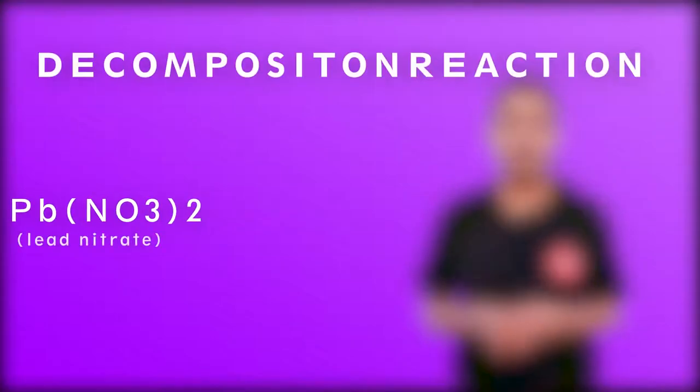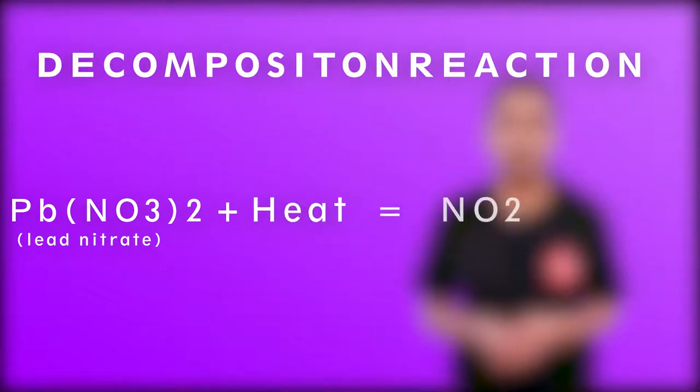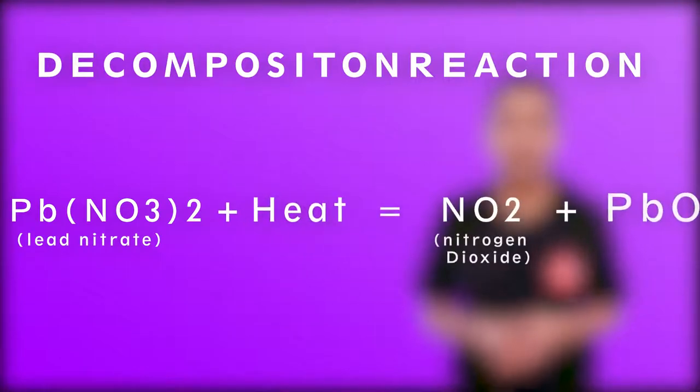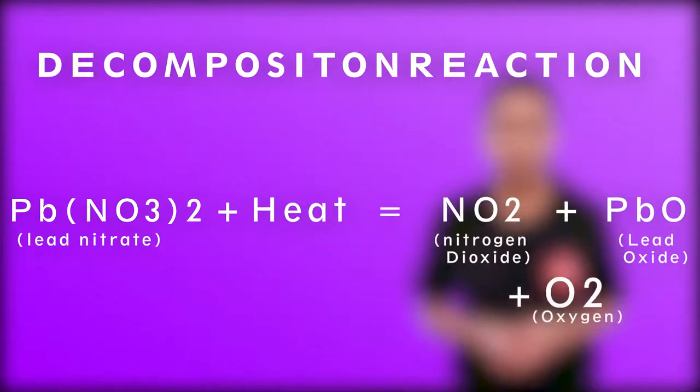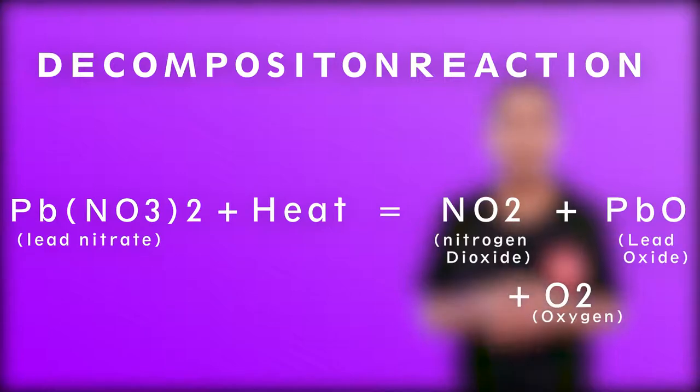What happens when lead nitrate is heated? When lead nitrate is heated, it forms nitrogen dioxide, lead oxide, and oxygen. Nitrogen dioxide is an irritating gas with brown fumes. So we have seen what happens when heat is involved in the reaction.